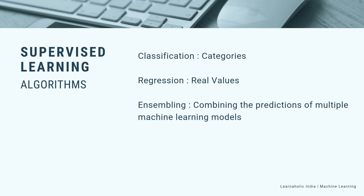Ensembling is another type of supervised learning. It means combining the predictions of multiple machine learning models that are individually weak to produce a more accurate prediction on a new sample.